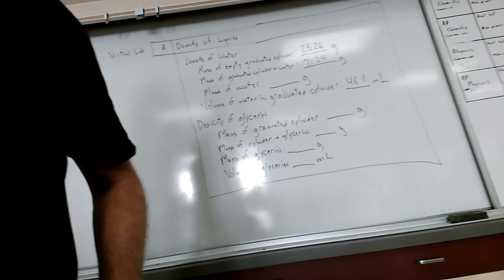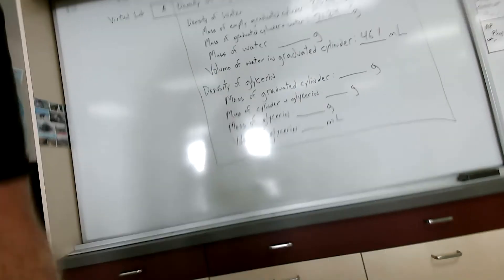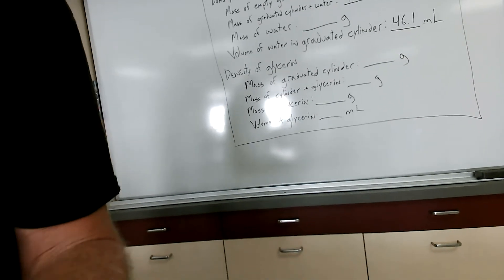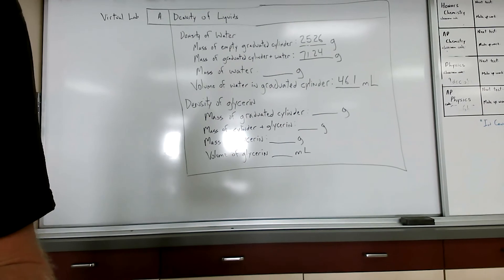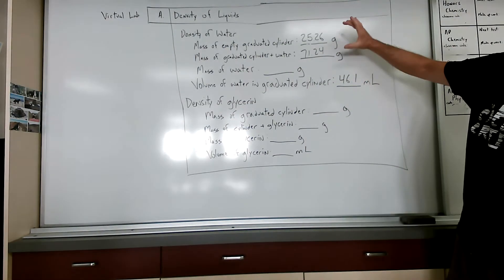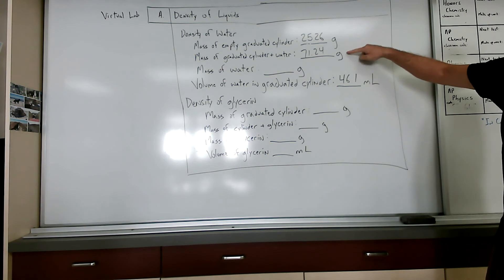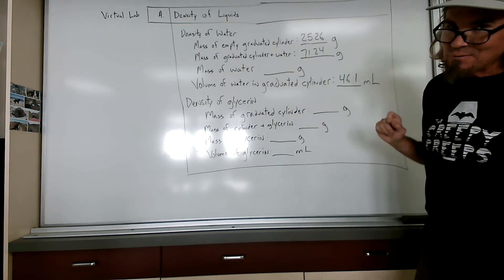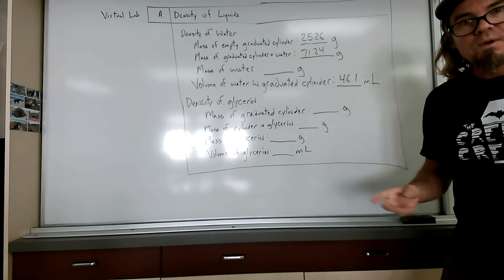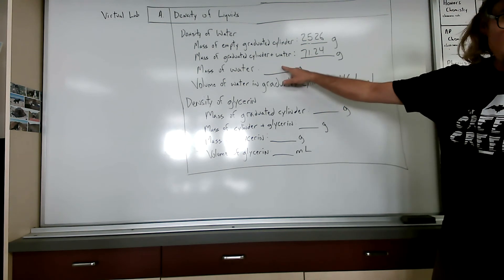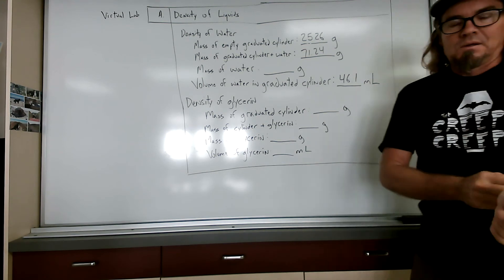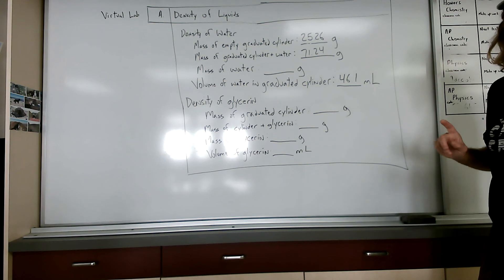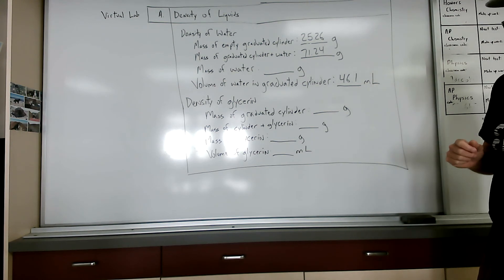Okay, now let's point out a couple of things we need to talk about on the whiteboard. We have the mass of the empty graduated cylinder, and we have the mass of the graduated cylinder with the water. I'm not going to tell you what to do today in the virtual lab with how you find the mass of the water — I think you can figure that out. We also have the volume. Remember that the formula for density is mass divided by volume. Let's see how that comes out. Now let's try the same thing with glycerin.